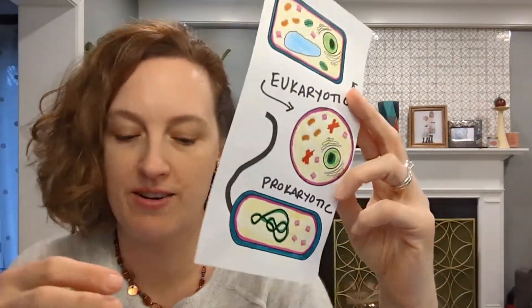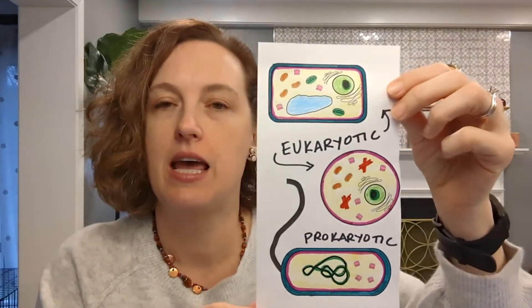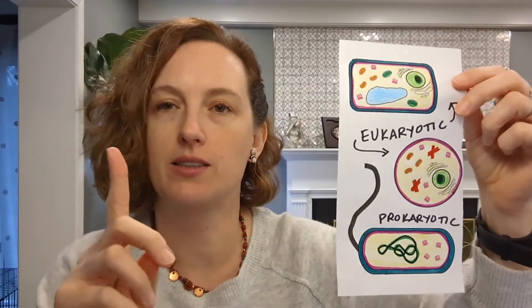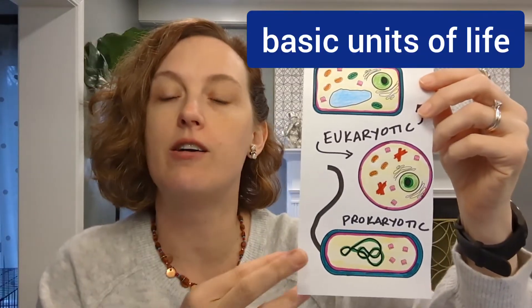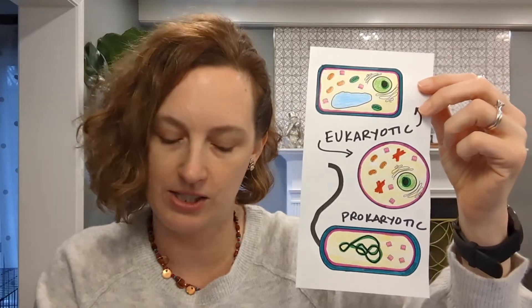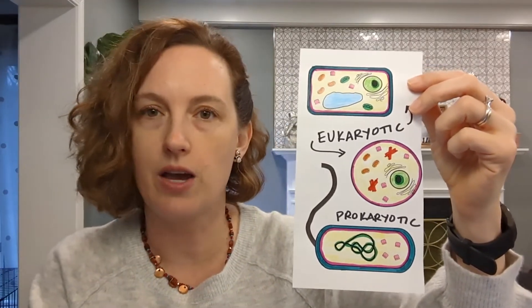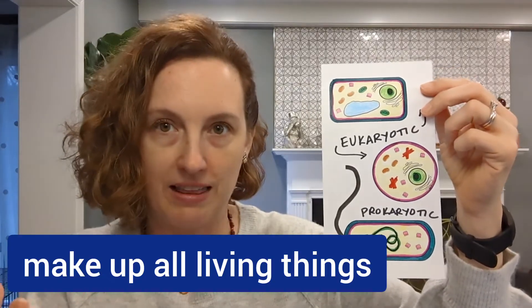The final thing we're going to talk about is what all these cells have in common. They are all cells, and cell theory has three parts. Part one: cells are the basic unit of life. Part two: all living things are made of either eukaryotic or prokaryotic cells — you can't have life without cells. This is fascinating because it means viruses are not alive: viruses aren't prokaryotic or eukaryotic, they aren't made of cells, and therefore they are technically not a living thing.